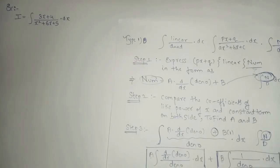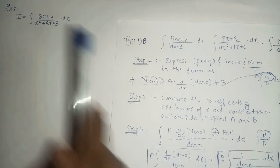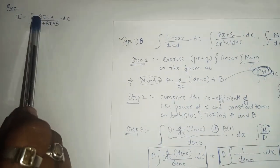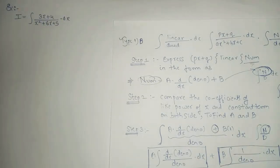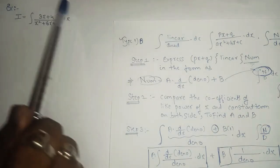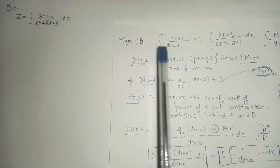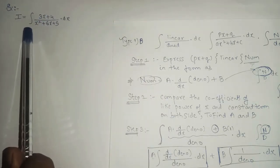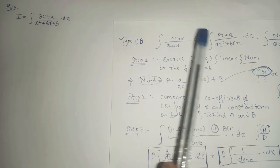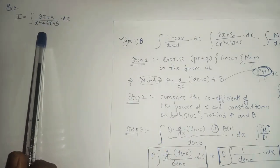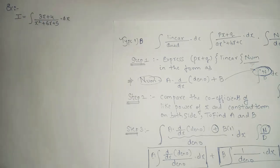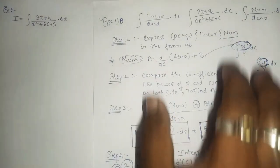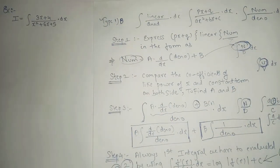Let's take one example. We can clearly see that 3x plus 4 is a linear form, as the power of the variable is 1. The denominator is in the form of a quadratic. So we can say this looks like the linear upon quadratic form: px plus q upon ax squared plus bx plus c. Whenever the numerator is linear and denominator is quadratic, you have to follow the proper steps.